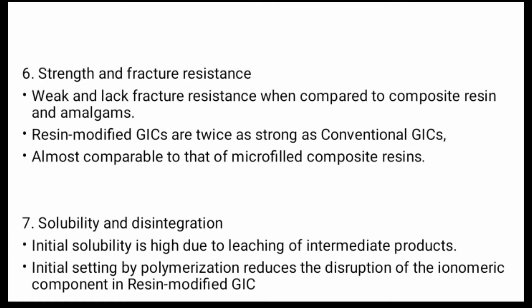Glass ionomer cement has weak fracture resistance compared to composite resin and amalgam. Resin-modified GIC is twice as strong as conventional GIC, making it almost comparable to micro-filled composite resin. Initially, GIC has high solubility due to leaching of intermediate products. Initial setting by polymerization reduces disruption of the ionomeric component in resin-modified GIC.